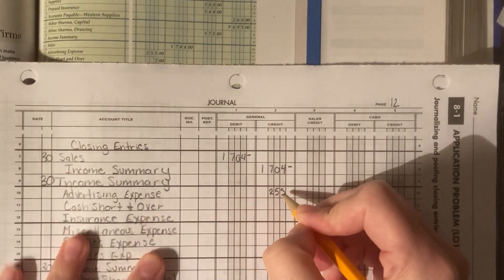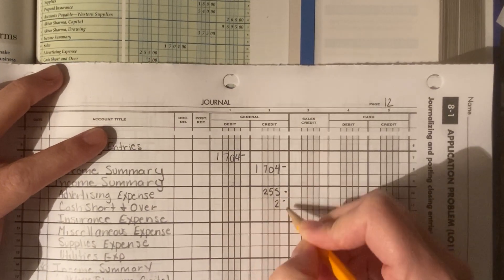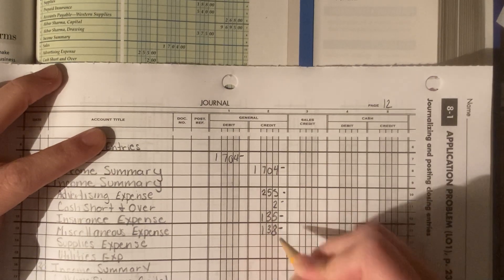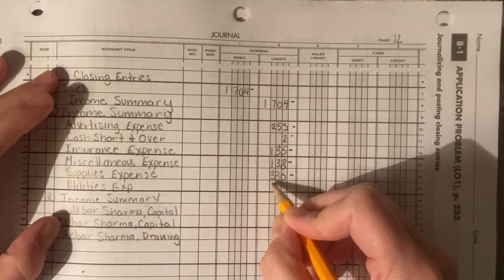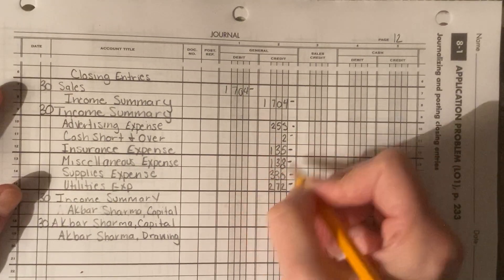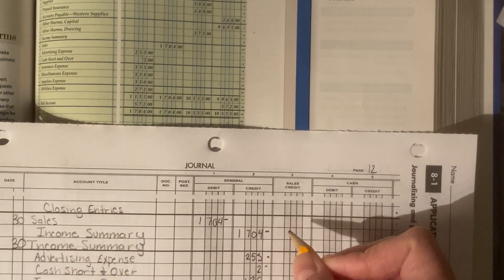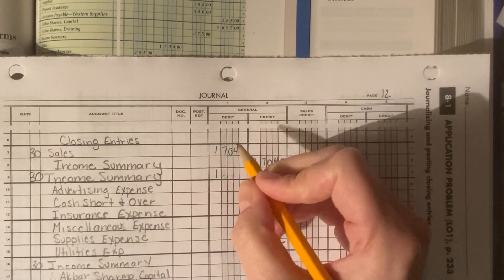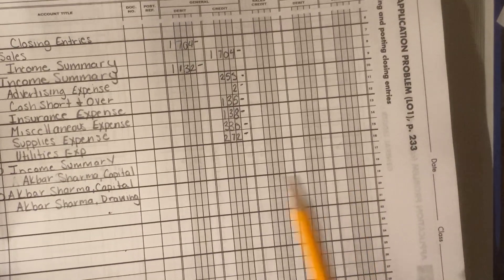So, I will start here at $255 is my advertising expense. Cash short and over is $2. Insurance expense is $135. Miscellaneous is $138. Supplies expense is $330. $272 is your utilities expense. You have a calculator, add it up. Make sure you copied it over right. This is strategic. You need to make sure you copy it over right. Okay? When we add it up, we should get a total of $1,300. I'm wrong. $1,132. And this amount should match the one on our book, $1,132. Because we already totaled that column, but we need to make sure we wrote the right responses.